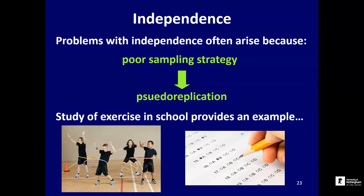What we're talking about here is essentially poor sampling strategy leading to the phenomenon of pseudo-replication — where what appear to be replicates are not really replicates. Let's look at a clean example of how you can reach the wrong conclusion if you don't design your sampling strategy sensibly. This example is quite close to home because this is research done in the school — though I'm pretending they designed the study badly; in fact they designed it very well. The study was designed to look at the effect of exercise on learning in primary school children.